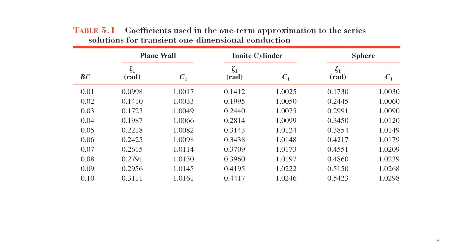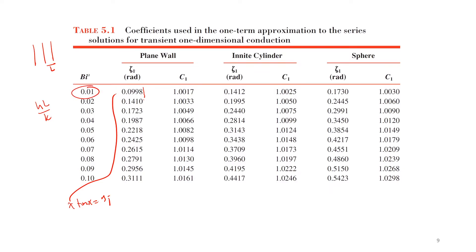First, calculate the Biot number as hL/k, where L is the half-thickness — not Lc, just L for a symmetric plane wall. Then look up the roots ζn from x·tan(x) = Biot number in Table 5.1. For a given Biot number, ζ1 and C1 are tabulated for the planar wall geometry.